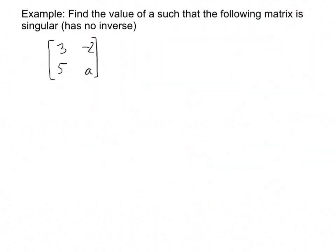My first example here is to find the value of A such that the following matrix is singular. In other words, has no inverse. So how do we do that? We do that by finding the determinant of this matrix. The determinant of this matrix, 3, negative 2, 5A, is 3A plus 10. So then I've got 3A plus 10 equals 0.